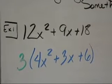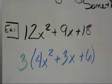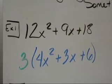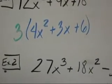So my answer is 3 times the quantity, 4x squared plus 3x plus 6. Let's look at another one.